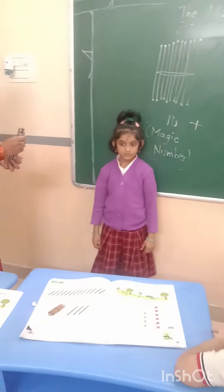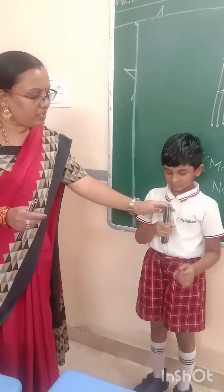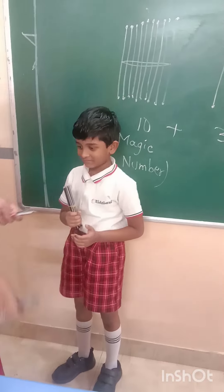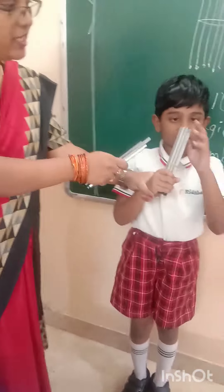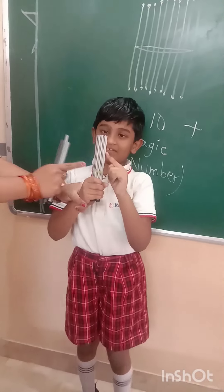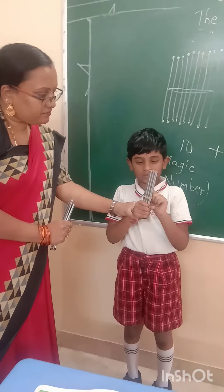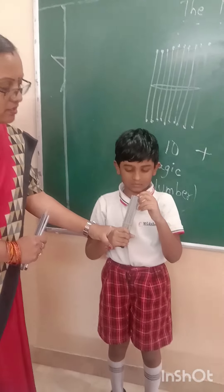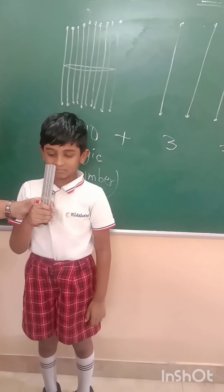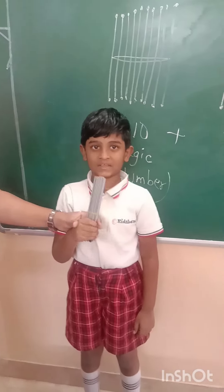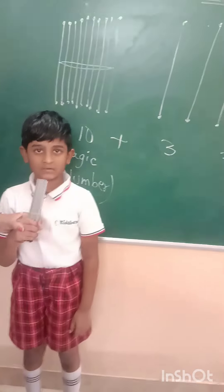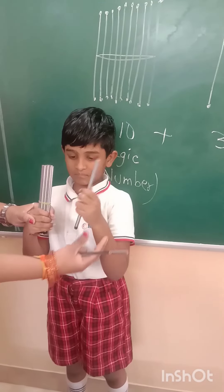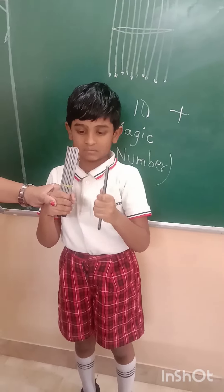Now Pratik, come. What is this? How many are there? 10 — 10 is magic number. Now add. Show me 11. 10 plus 1 — 11.